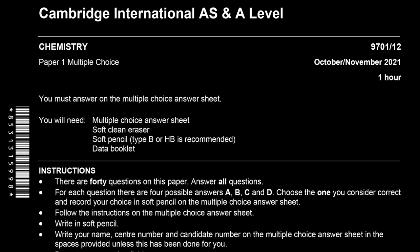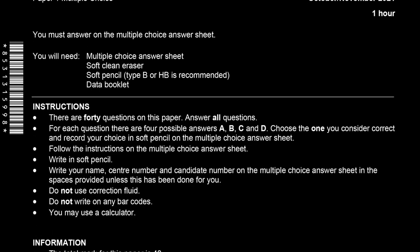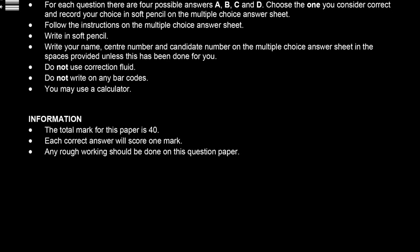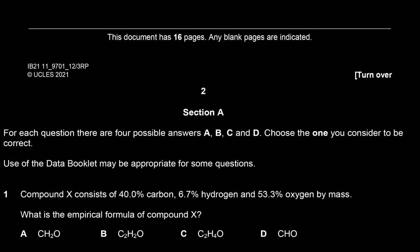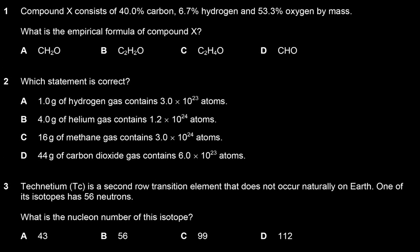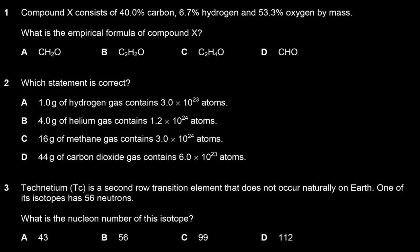So today we're going to be solving October/November 2021, Paper 12. Question number 1 says compound X consists of 40% carbon, 6.7% hydrogen and 53.3% oxygen by mass. What is the empirical formula of compound X?